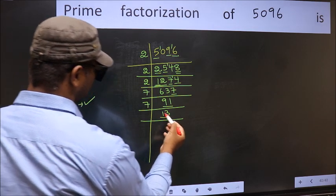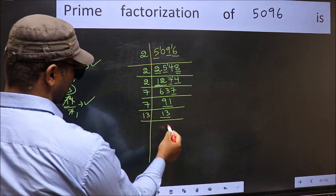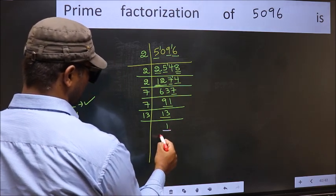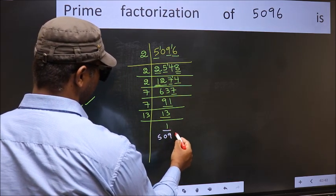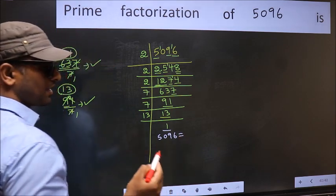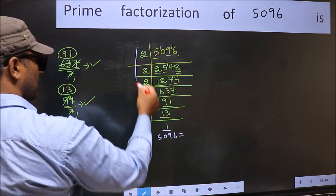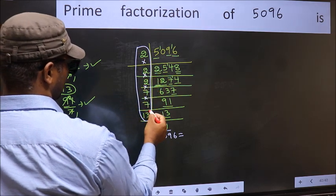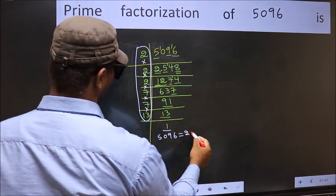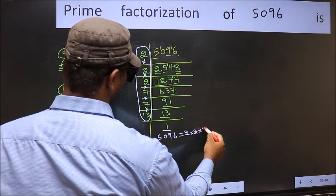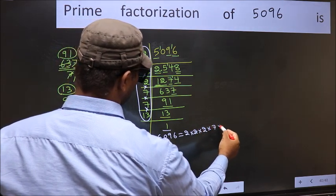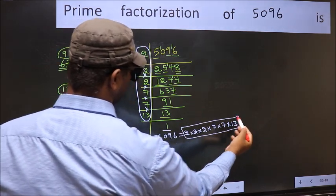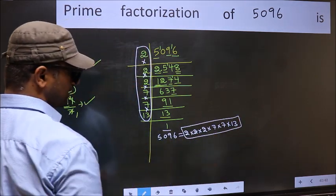Now we have 13. Since 13 is a prime number, we write 13 once and get 1. So the prime factorization of 5096 is the product of these numbers: 2 times 2 times 2 times 2 times 7 times 7 times 13. This is the prime factorization of 5096. Thanks.